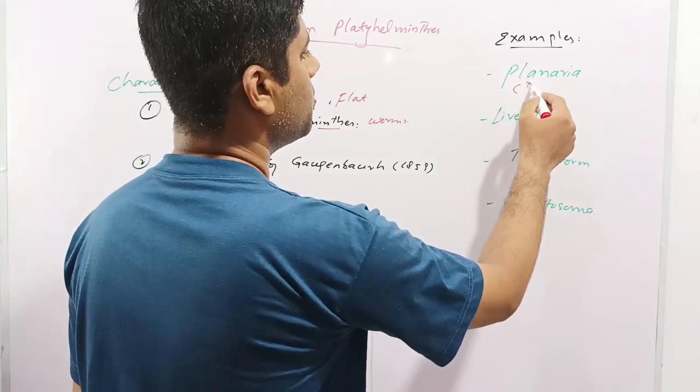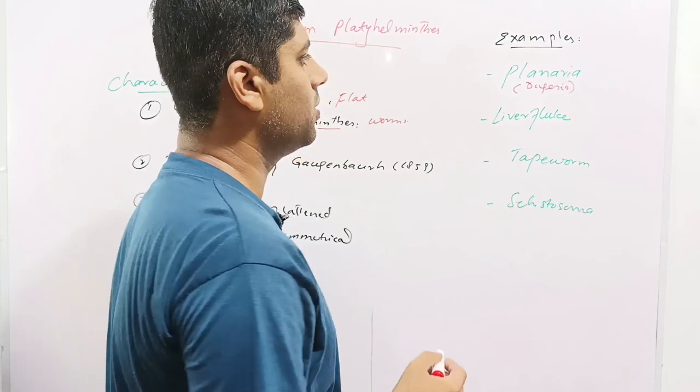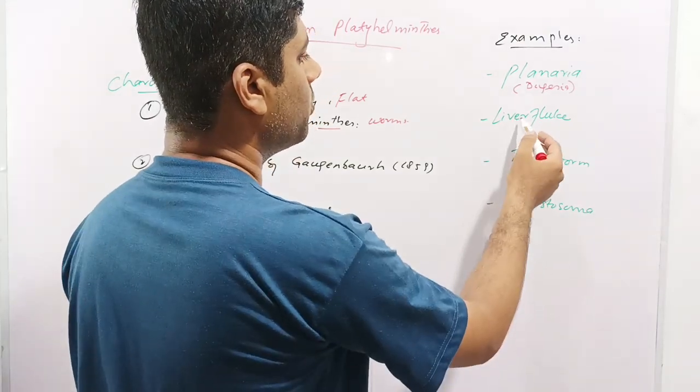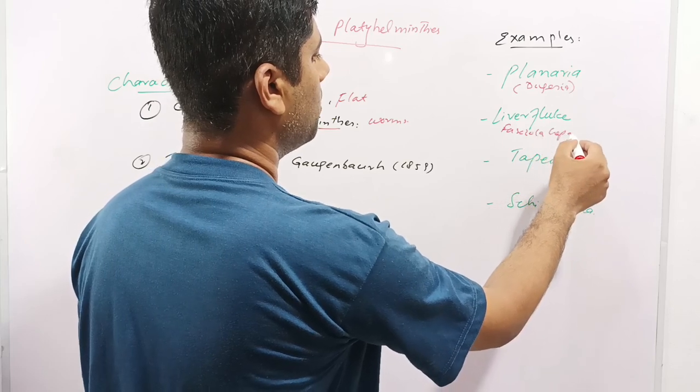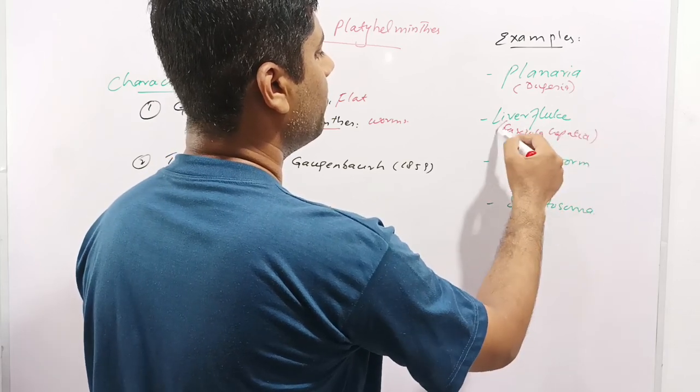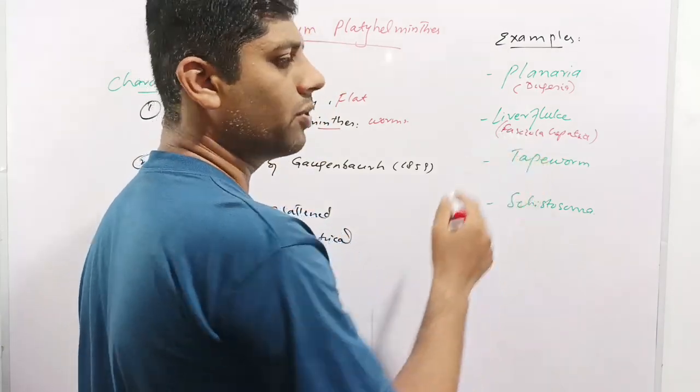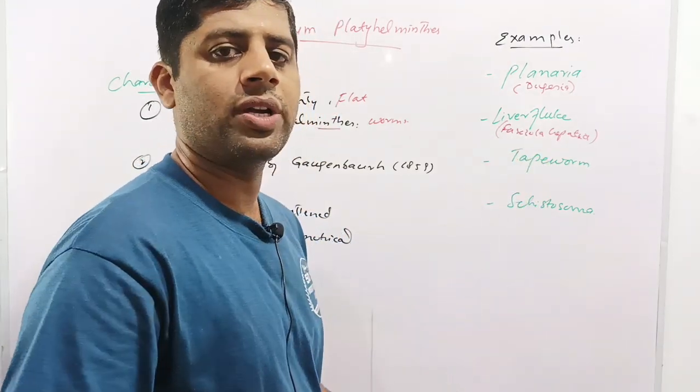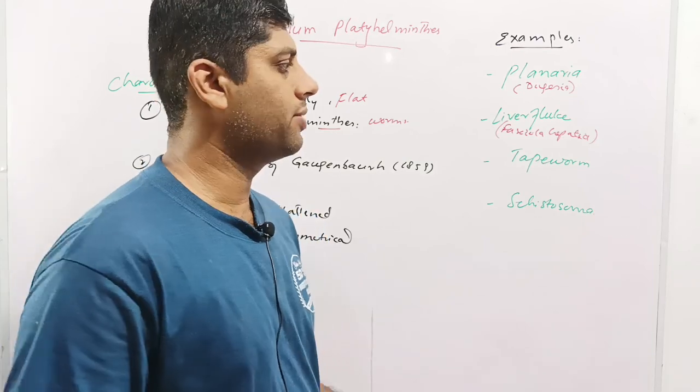Planaria is also called Dugesia and it is a free-living aquatic organism. Liver fluke is also called Fasciola hepatica. Because it resides in the liver, it is called Fasciola hepatica. This liver fluke is found in the liver of animals and causes huge economic losses in terms of diseases and mortality rate.